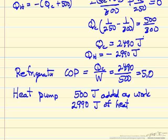Whereas if this 500 joules was added to just a resistive heater, for example, 500 joules of work would give us 500 joules of heat. But this then is a very efficient way to heat a building by taking advantage of a cycle.